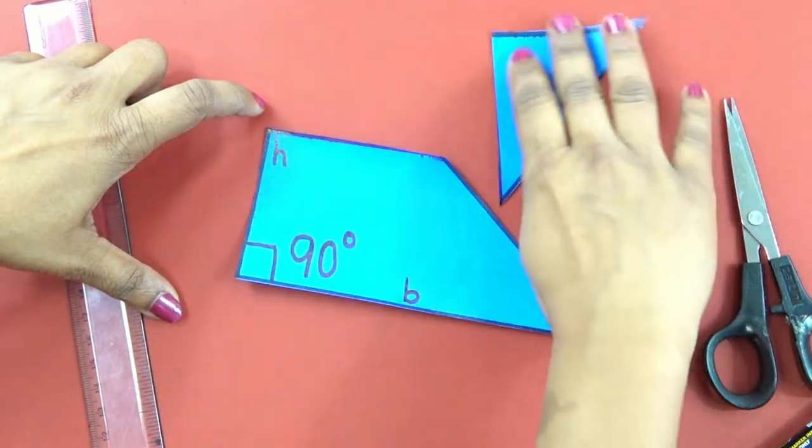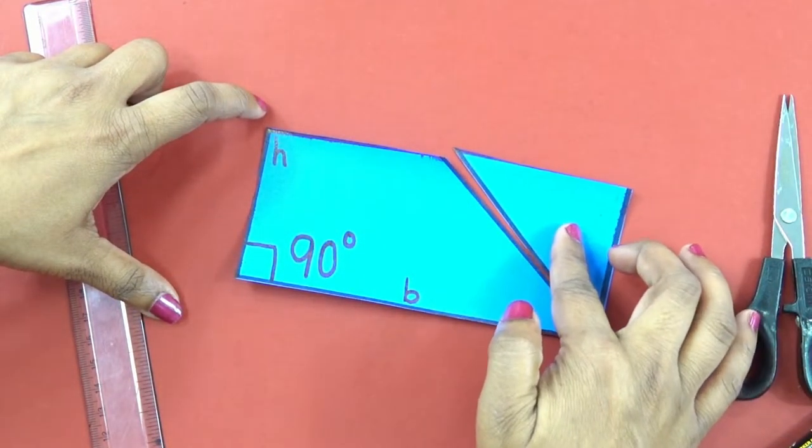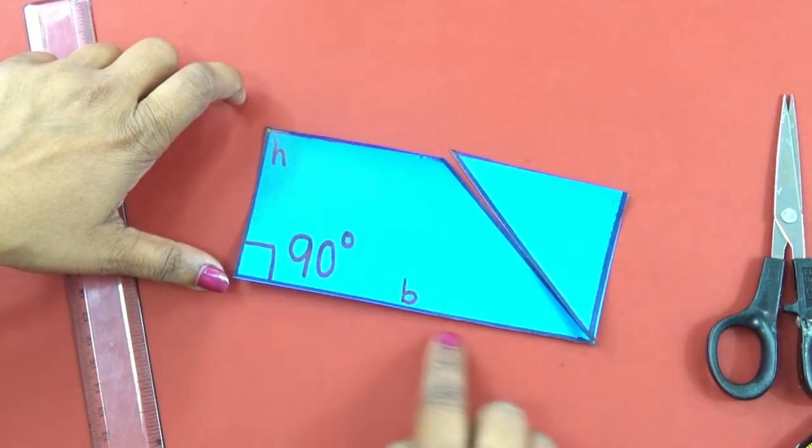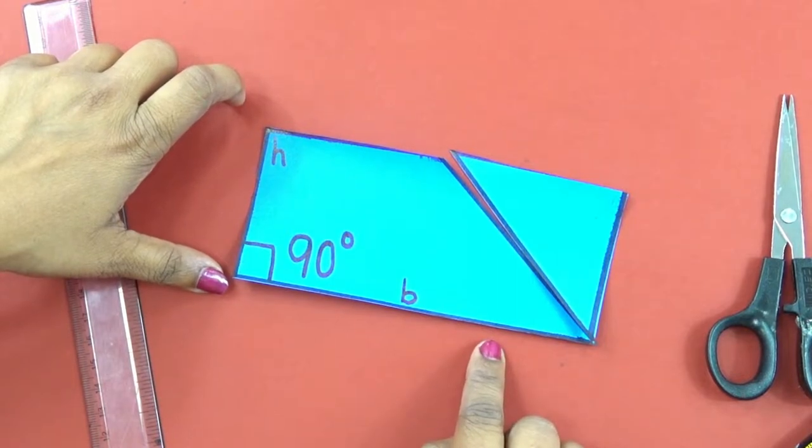it actually becomes a rectangle with base and height as its two sides. Isn't it amazing?